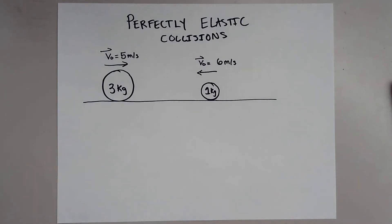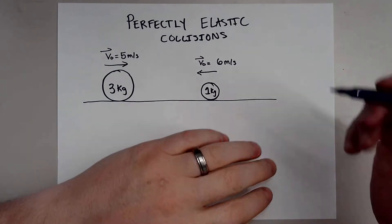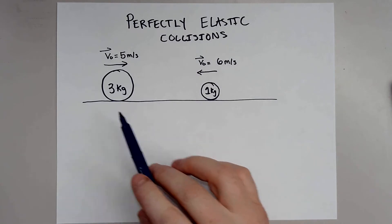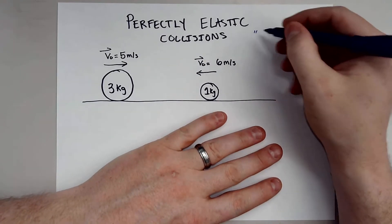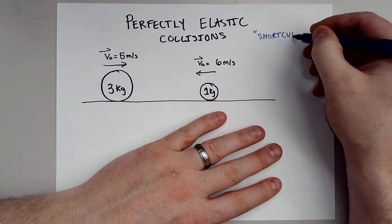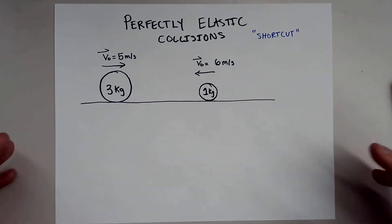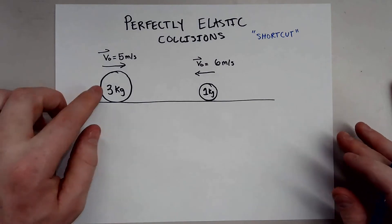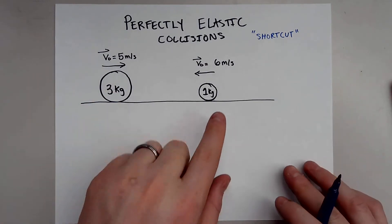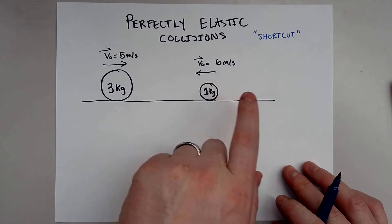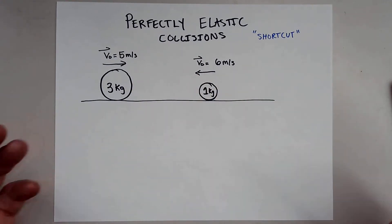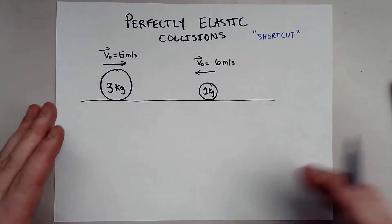What's really interesting about this video, and you won't find anywhere else, is that these objects will have different masses. So I'm going to show you the shortcut way of doing these. The problem states that you have a 3 kilogram mass moving to the right at 5 meters per second, and a 1 kilogram mass moving to the left at 6 meters per second. The question is, what will their final velocities be after they collide?